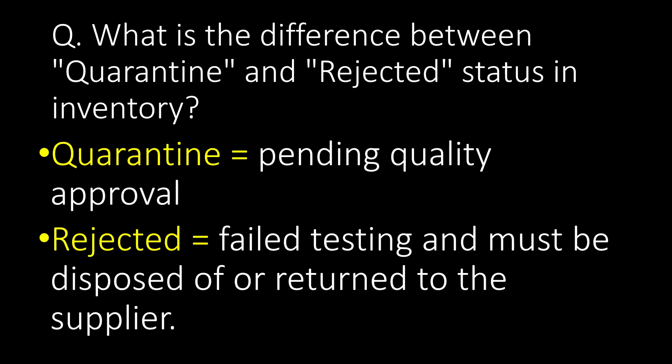What is the difference between quarantine and rejected status in inventory? Quarantine status is for materials pending quality approval, whereas rejected status is for materials that have failed testing and must be disposed of or returned to the supplier.